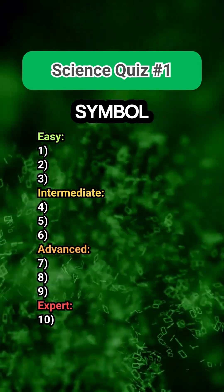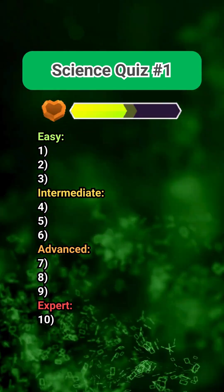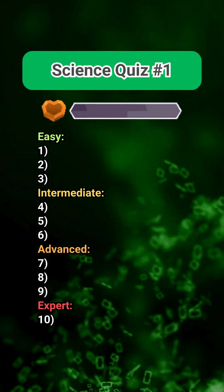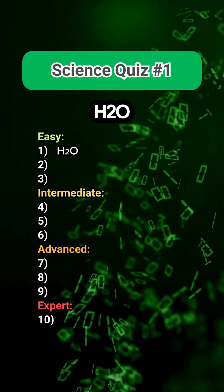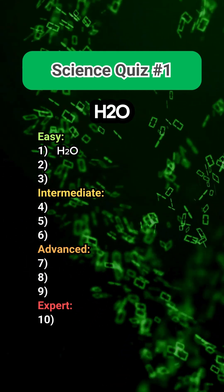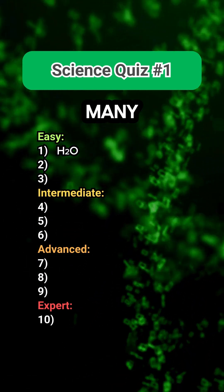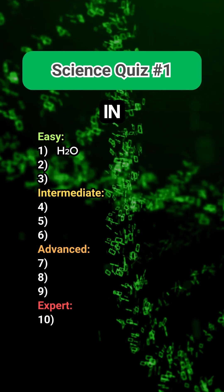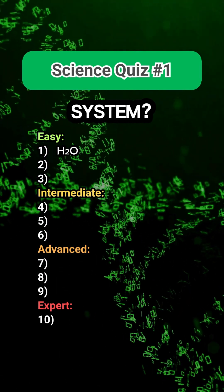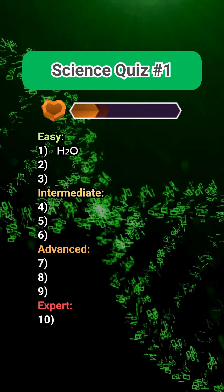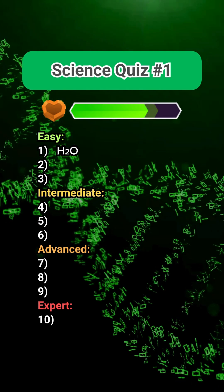What is the chemical symbol for water? H2O. How many planets are in our solar system? 8.